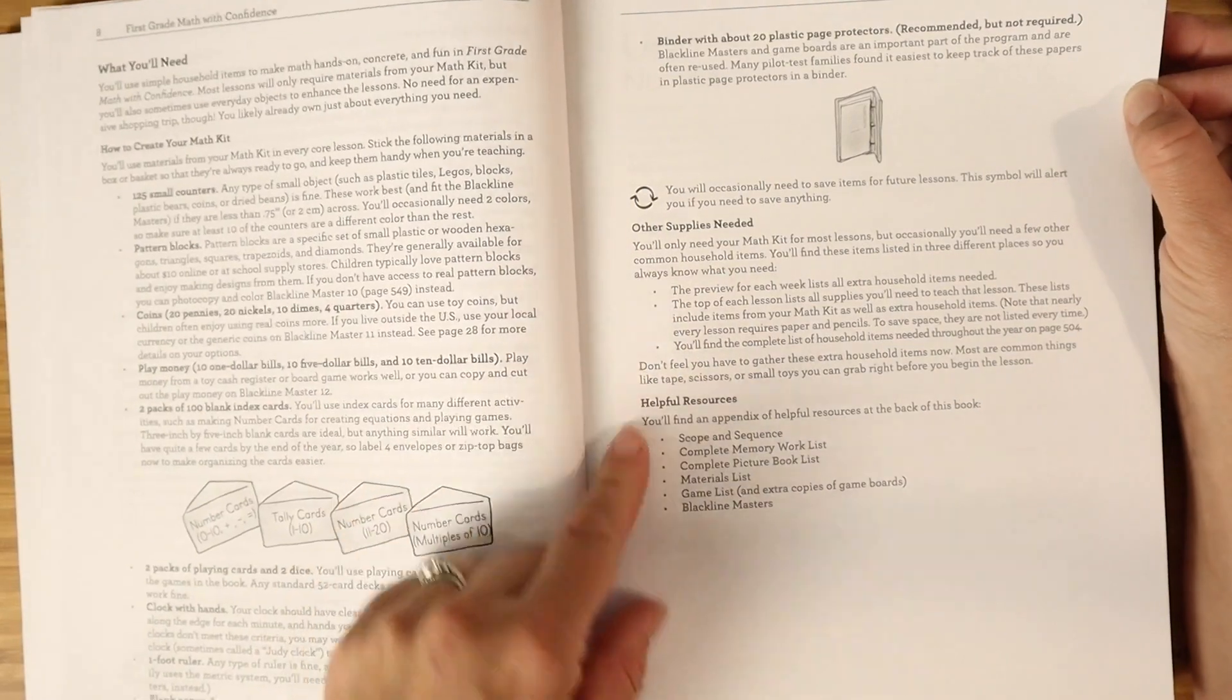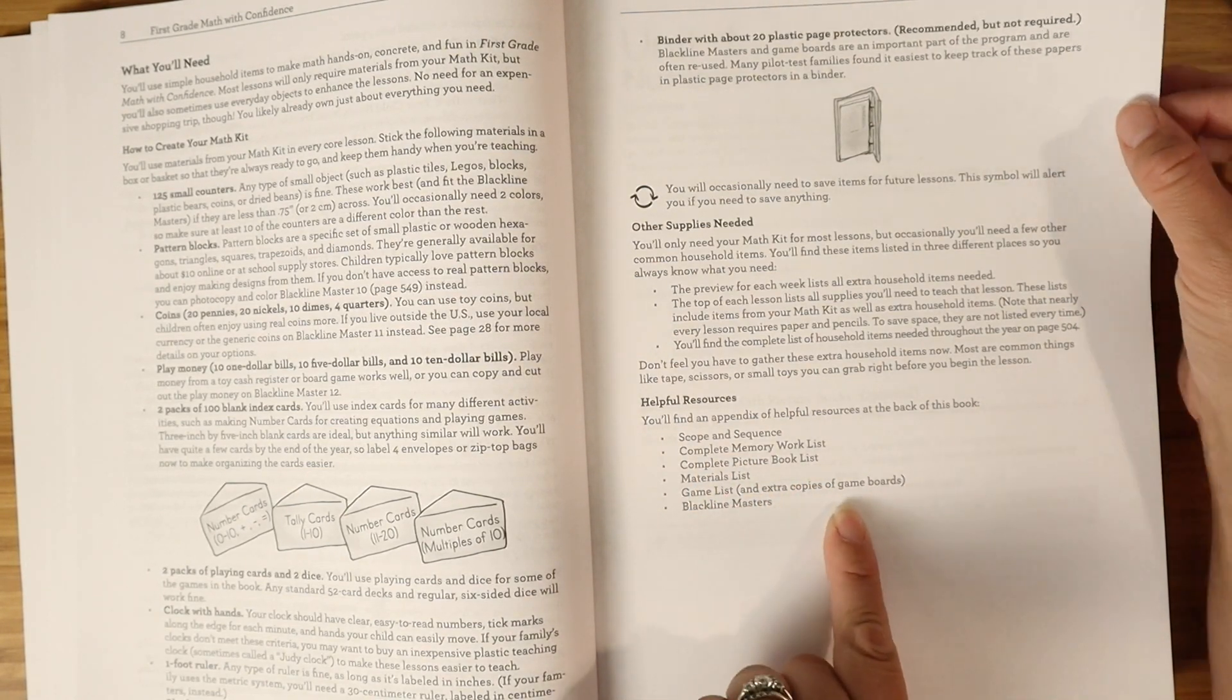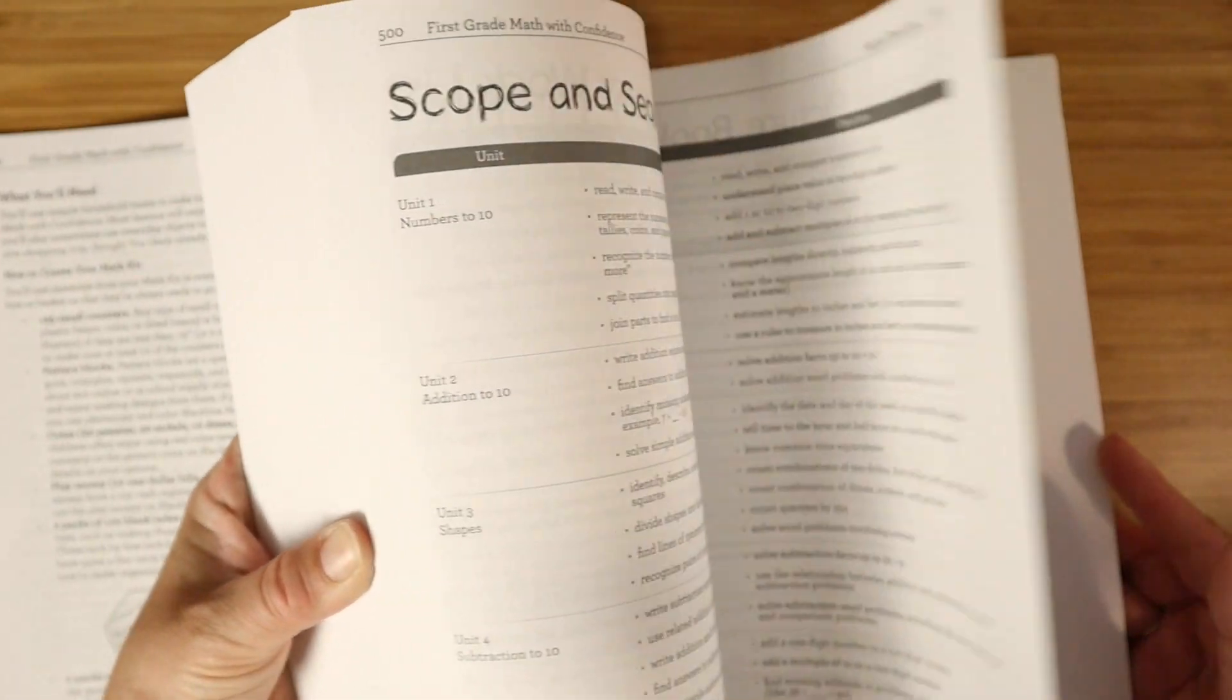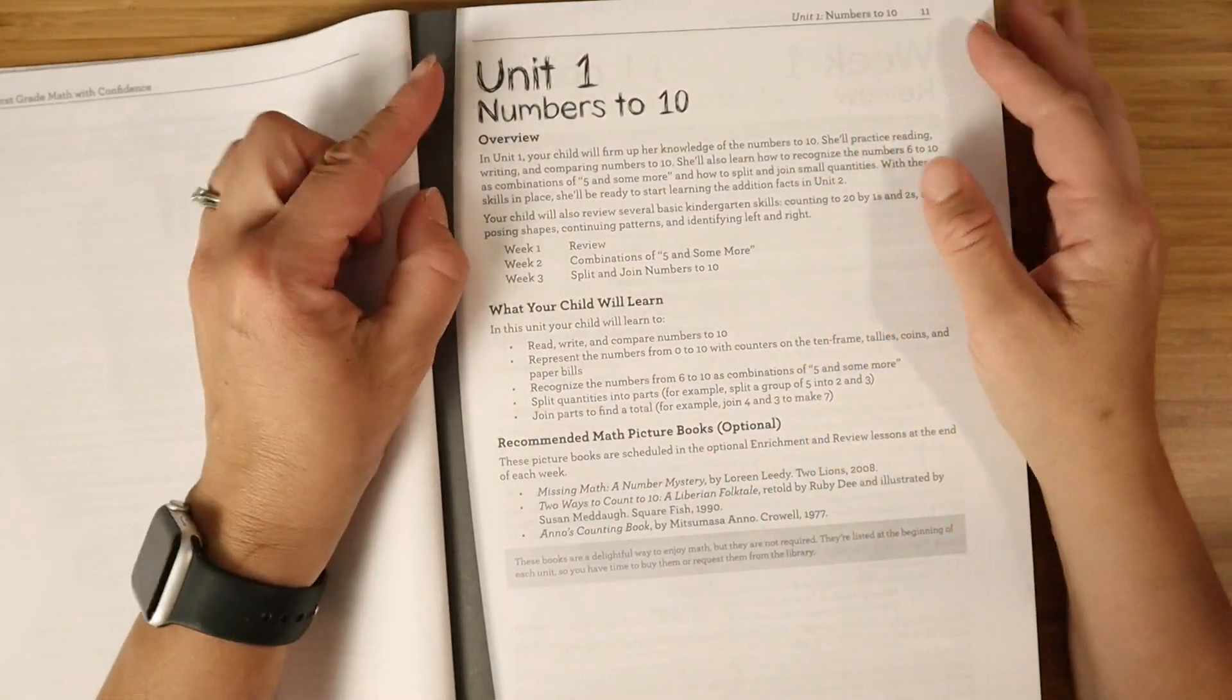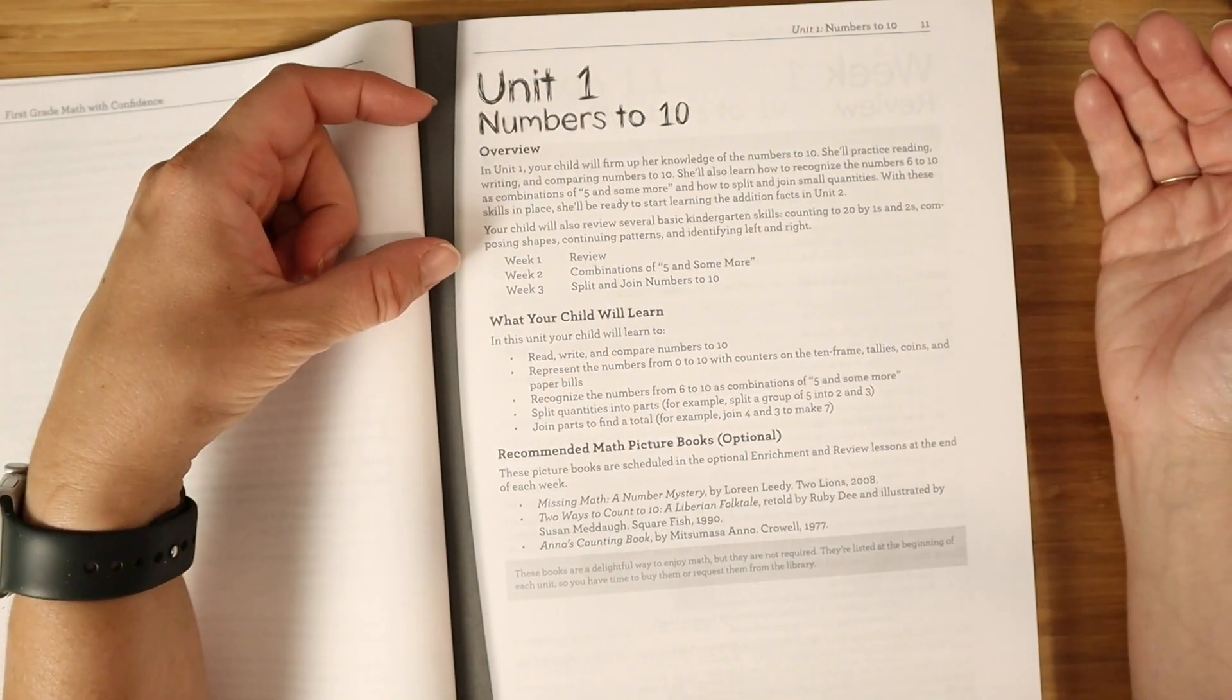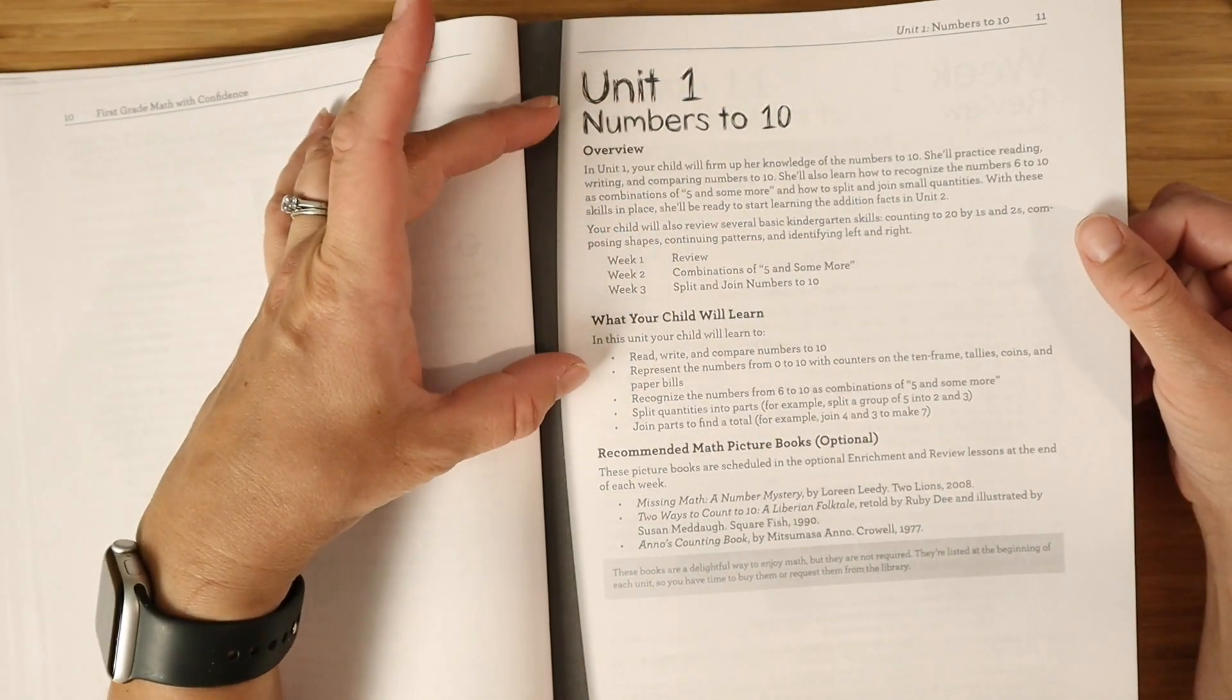We also have a little section here about helpful resources that are in the back of the book, including your scope and sequence, your complete memory work list, materials, game list, and extra copies of the game boards. Your extra game boards, your scope and sequence. And then we jump right into our different units. So again, it's broken up into units, and then each unit is broken up into weeks with four core lessons and one enrichment lesson each week.